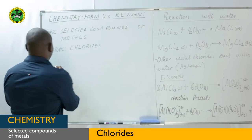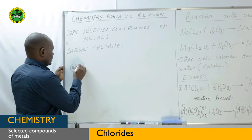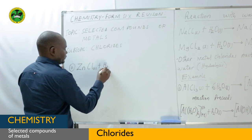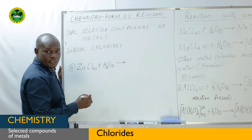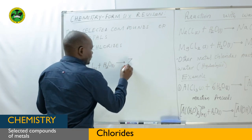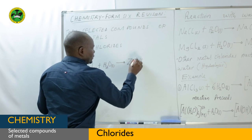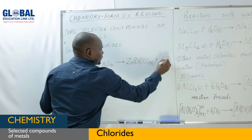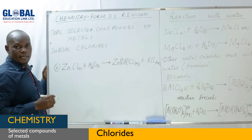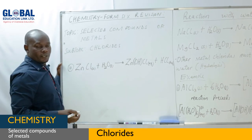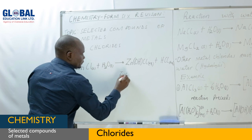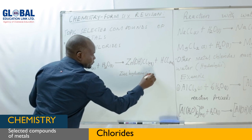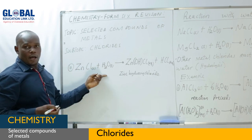Another example is zinc chloride. When zinc chloride reacts with water and undergoes hydrolysis, it results in the formation of zinc hydroxyl chloride, which is aqueous, plus hydrochloric acid, which is also aqueous. It's your task to balance the equation. This product is known as zinc hydroxy chloride, and that is also what we call hydrolysis.